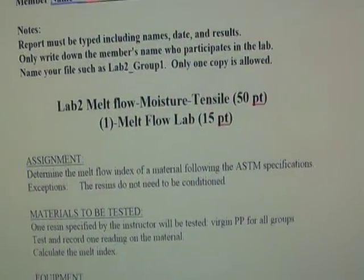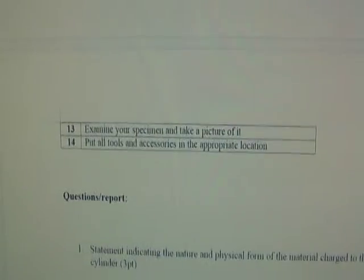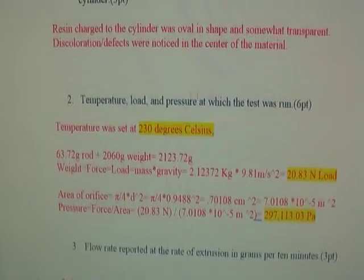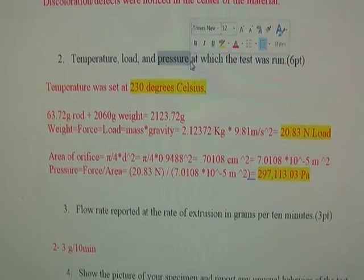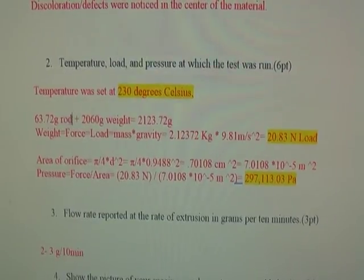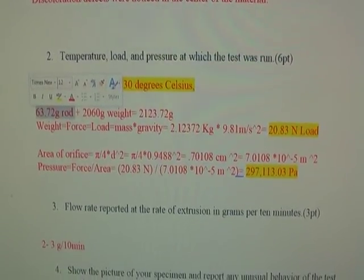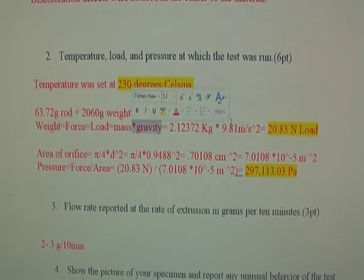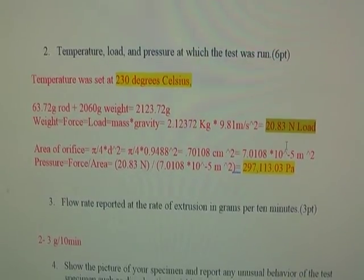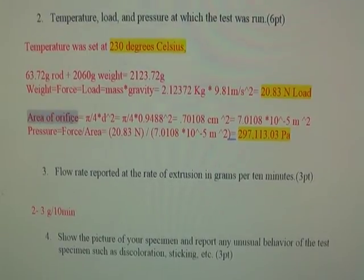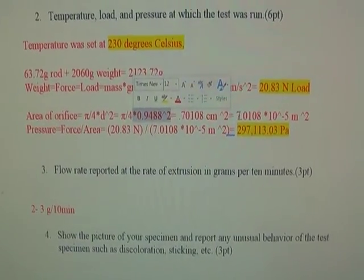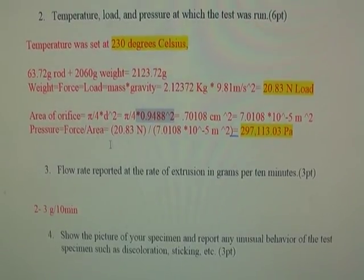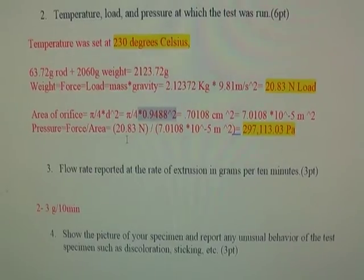For Lab 2, the MFI section: the load is about 20–60 grams, but when you calculate the pressure you also need to include the weight of the rod, which is 63.72 grams. Add them together and multiply by the gravity coefficient to get the force applied on the material. The contact area is based on the cross-sectional area of the rod. Pressure is force divided by area. Most of you lost points here, so make sure you understand this calculation.